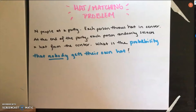Hi! This video will cover the hat or the matching problem. It states that n people are at a party. Each person throws their hat in the center, and at the end of the party, each person randomly selects a hat from the center. What is the probability that nobody gets their own hat?